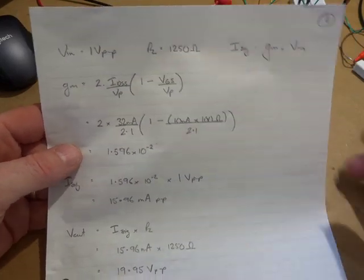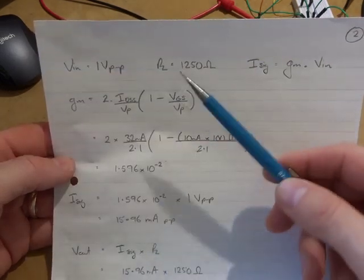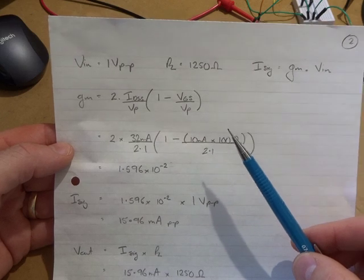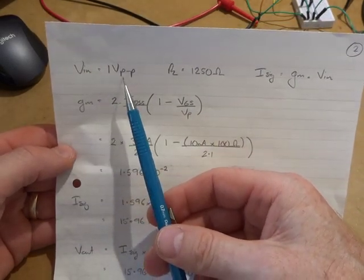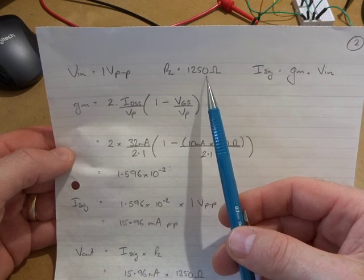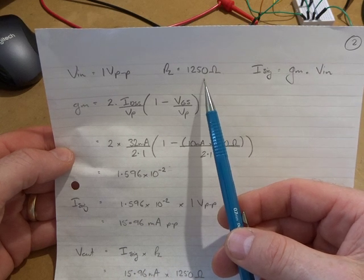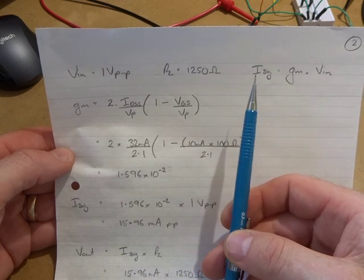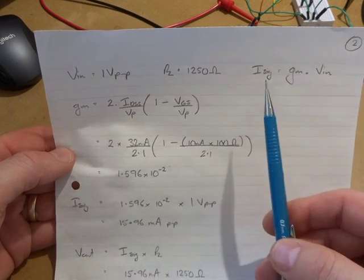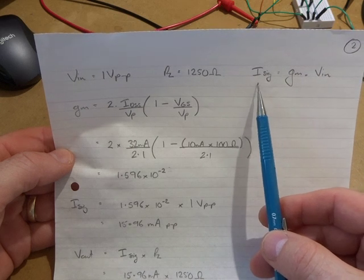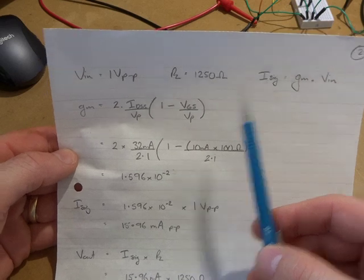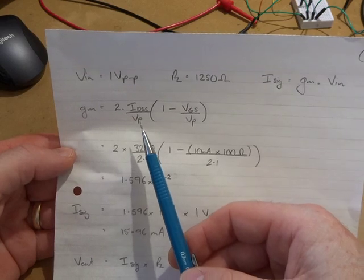I decided to work out the theoretical output voltage across that 50 ohm resistor based on pure formulas, and then compare that with an actual test with the oscilloscope and signal generator. I'm going to use an input voltage of one volt peak-to-peak. With that 15 to 3 turn transformer, that gives us 15 divided by 3 equals 5, so 5 squared, N squared times 50 gives us the impedance transformation from 50 ohms on the load back through to 1250 ohms being presented to the drain of the J310.